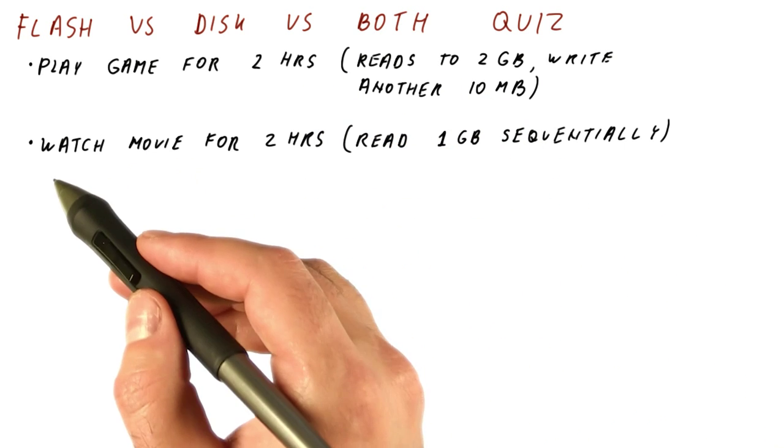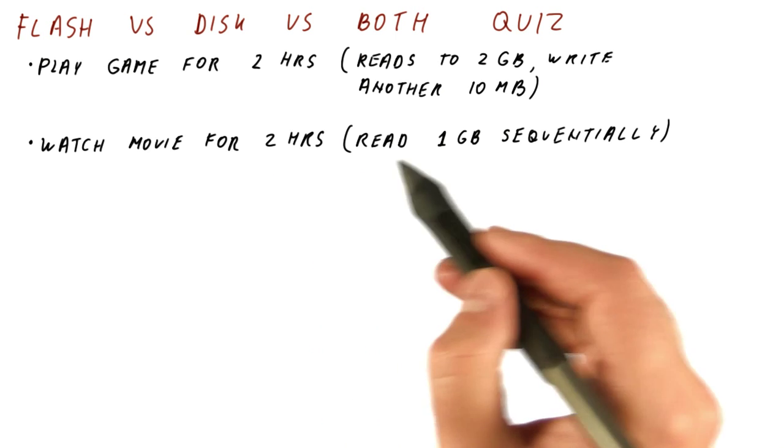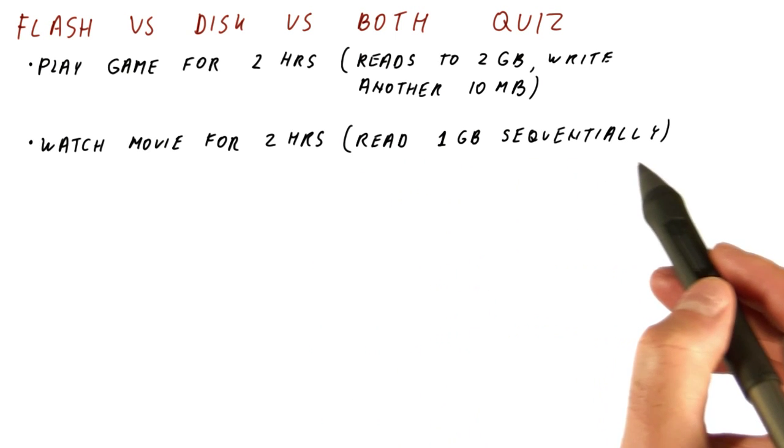And then after these two hours, the user switches to watching a movie for two hours, where throughout these two hours we will read one gigabyte sequentially, and then the user does this three more times.